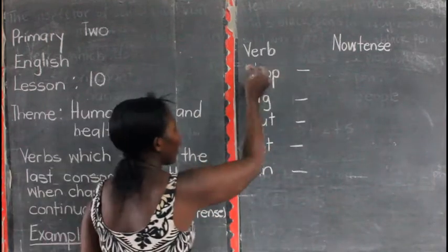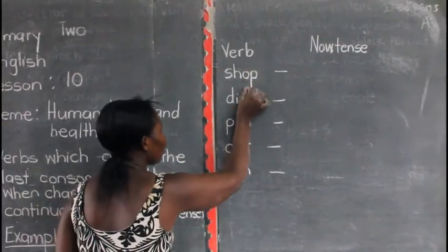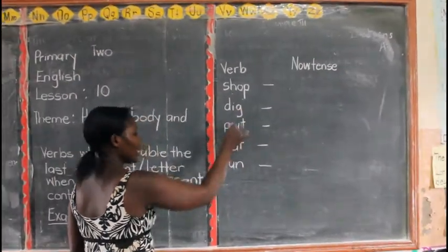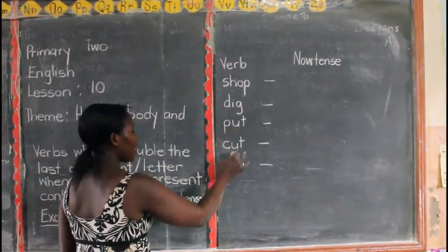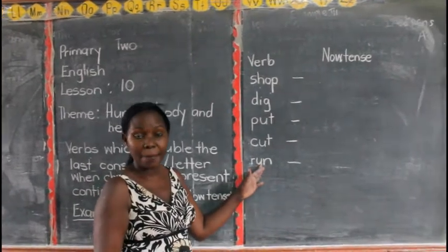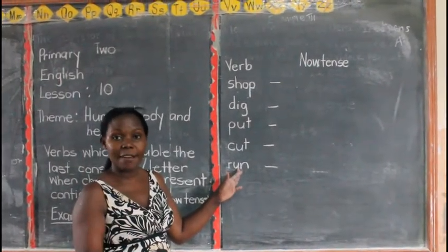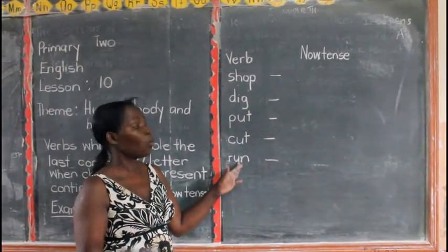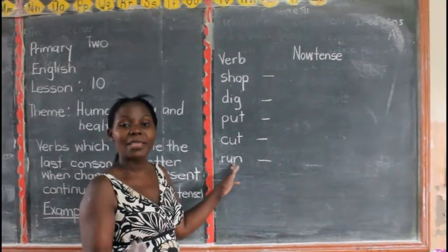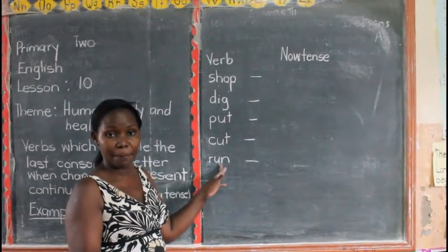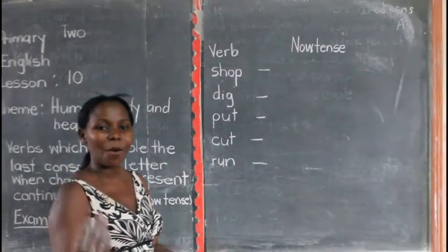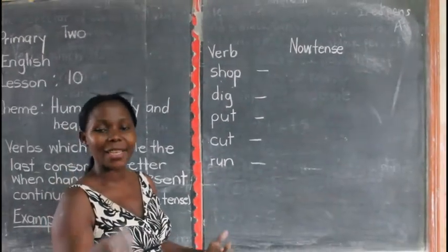The verbs are here. We have: shop, live, put, cut, run. These are not the only verbs — there are many verbs which double the last letter. But how do you identify them? Those verbs have a consonant letter as the last letter.